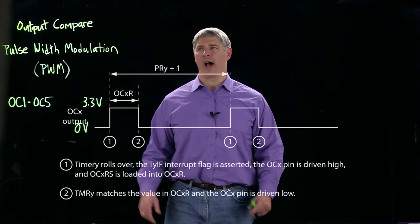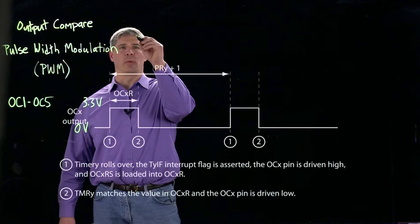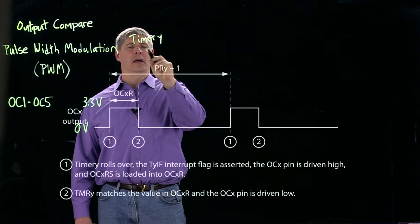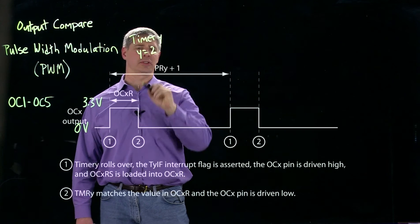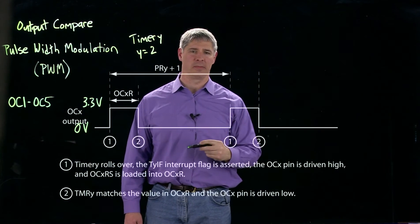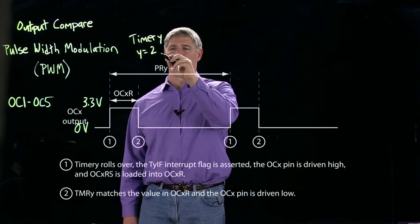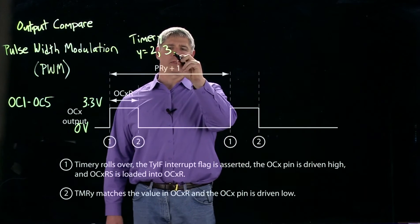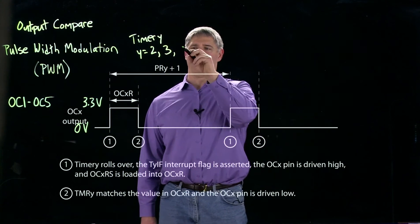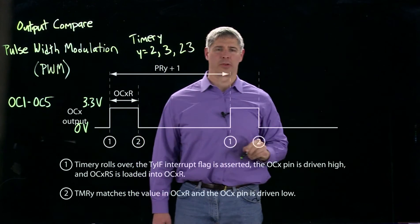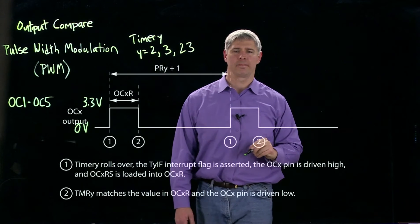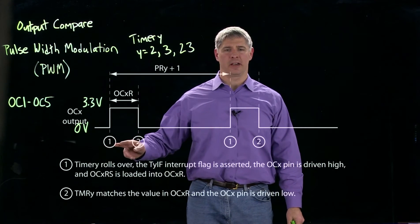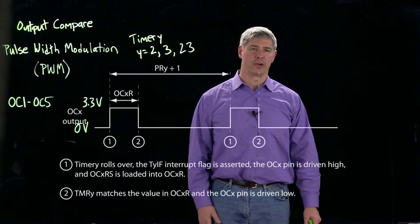Every output compare is based on a timer, called timer Y. For us, Y equals 2, so we could be using timer 2, a 16-bit timer, or timer 3, or we could be using the 32-bit timer defined as timer 2/3.